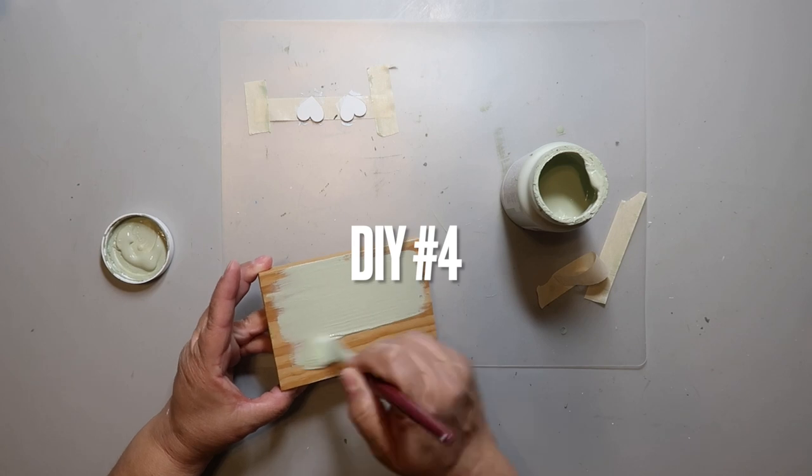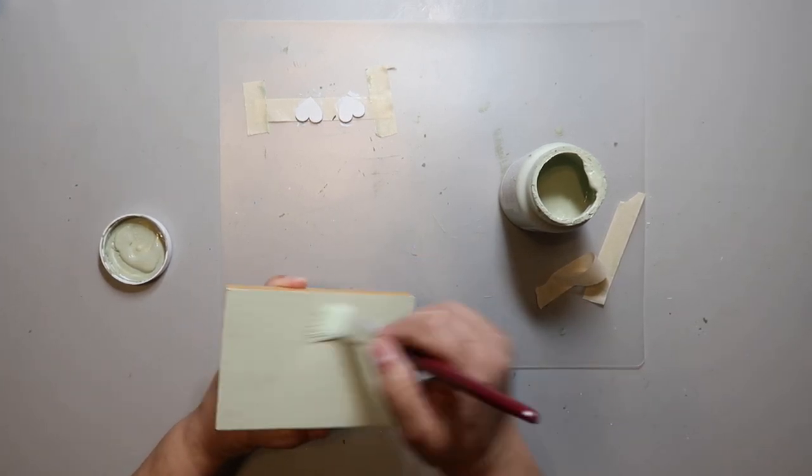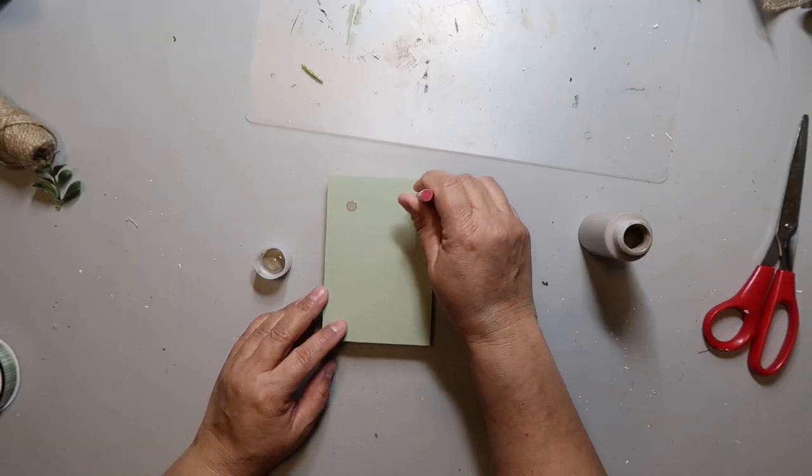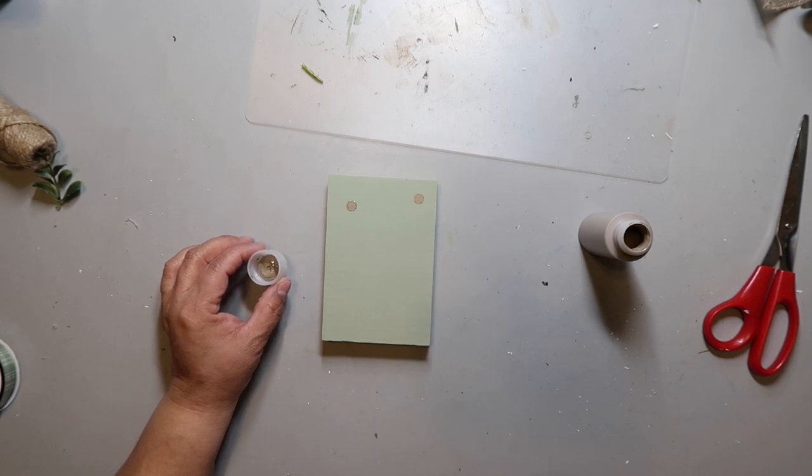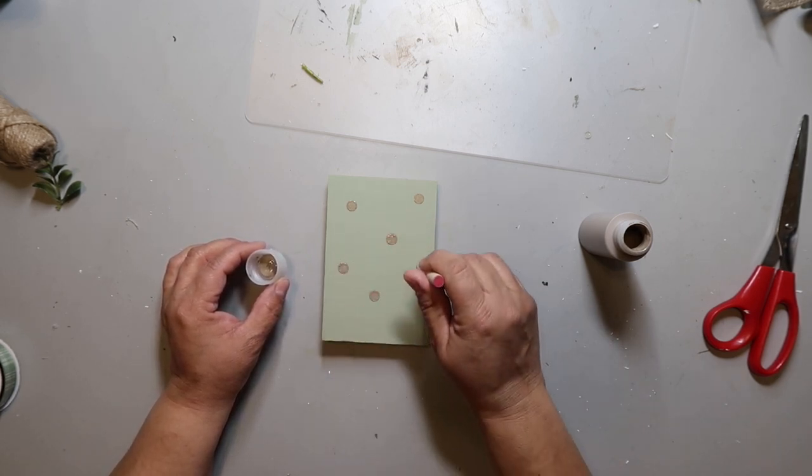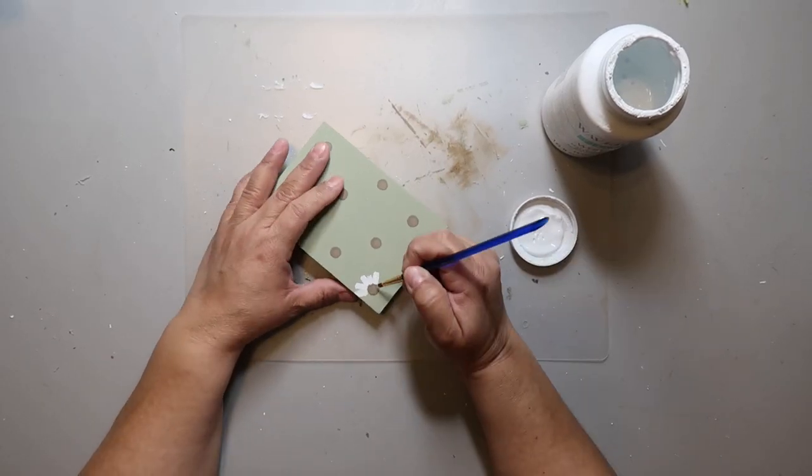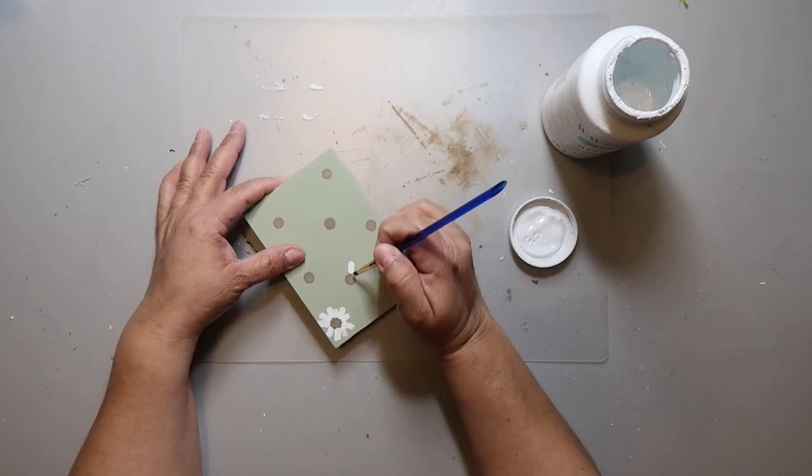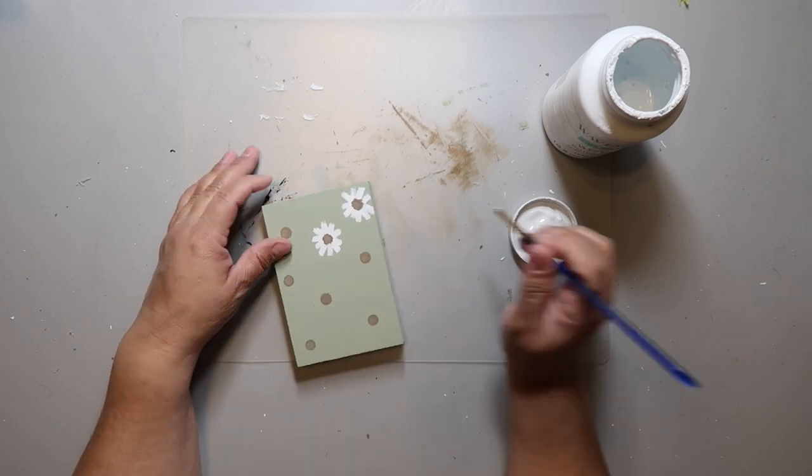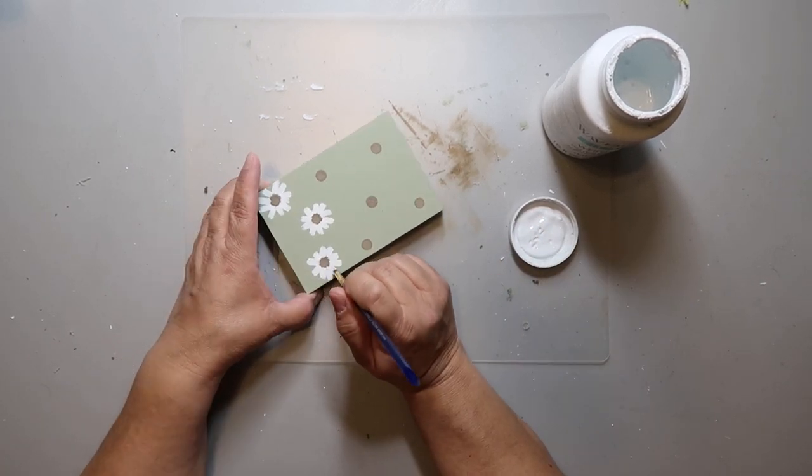For this one I take a scrap piece of wood and I paint it all one color. I'm kind of doing a green theme so I'm painting mine green. I took a little round sponge dabber thing and I made some circles on there using this mushroom colored paint. I then take some white paint and a small paintbrush and I start making little lines from the dot outward, kind of like a daisy shape.